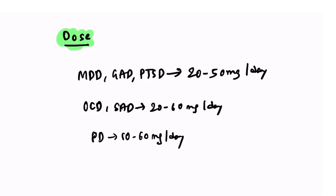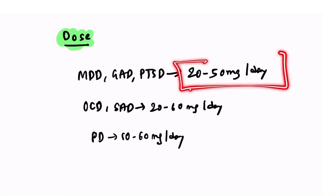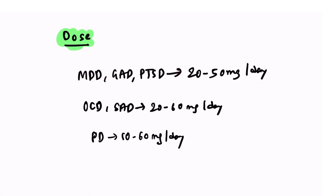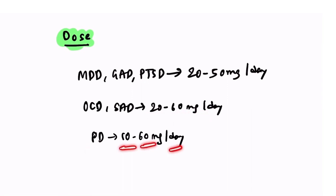Regarding doses, paroxetine is used at different doses for different conditions. For major depressive disorder, generalized anxiety disorder, and PTSD, the dose is 20 to 50 mg per day. For OCD and social anxiety disorder it is 20 to 60 mg per day, and for panic disorder it is 10 to 60 mg per day.